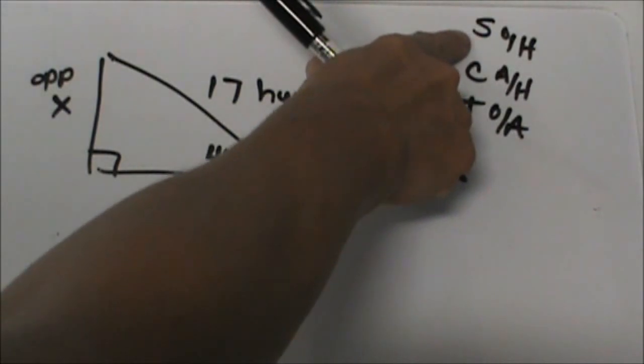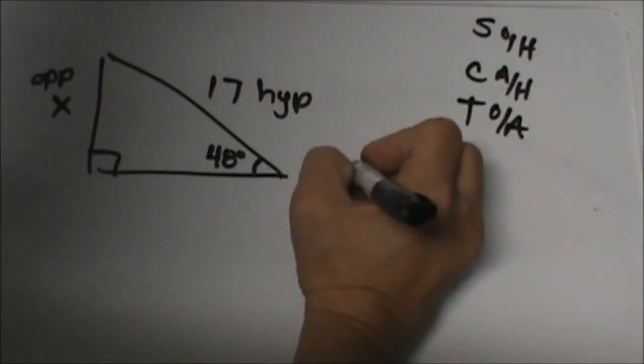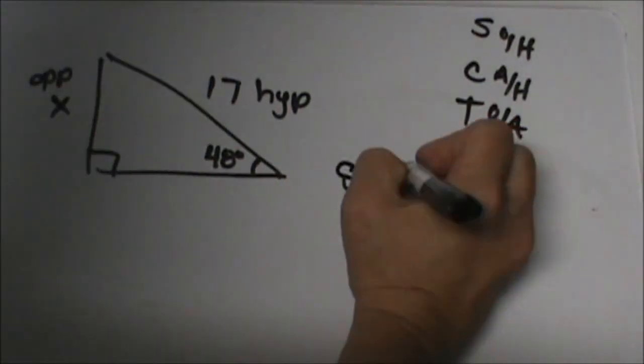And which trig function uses the opposite and the hypotenuse? Well that is the sine function. Because sine is opposite and hypotenuse. So I am going to set up the sine of what angle. What is my reference angle? It is 48 degrees.